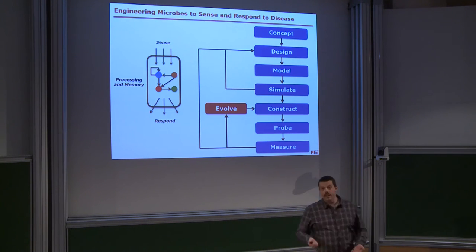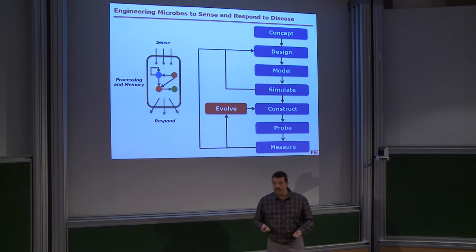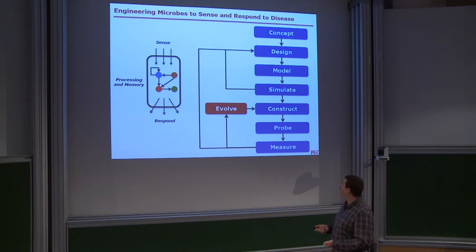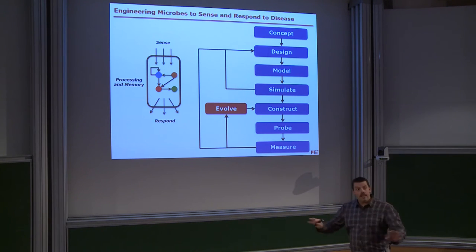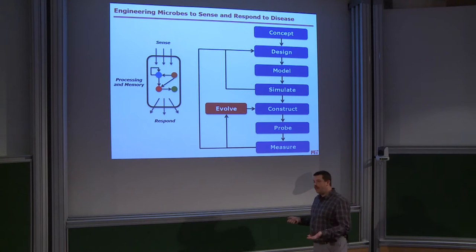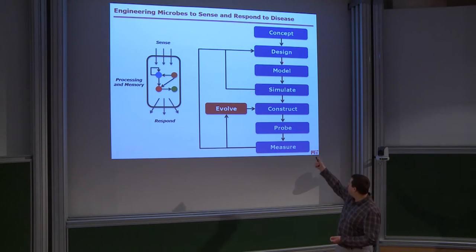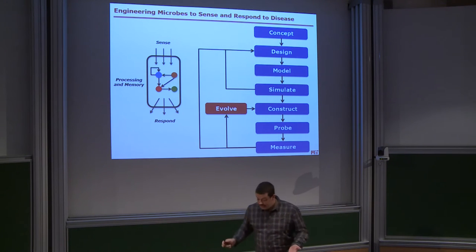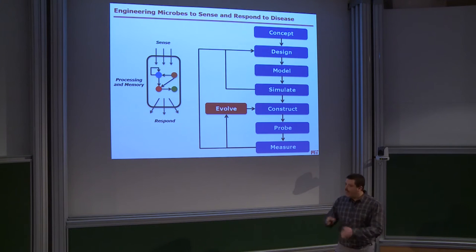We expect that synthetic biology, with its capability to design desired functions inside microorganisms, can help with designing microbes that will face this challenge. This is the common design-build-test cycle of synthetic biology: a concept leads to a design, which may be modeled and simulated, then constructed, probed in vitro, measured, and possibly evolved if something is not optimal. At MIT, as an engineering school, we strongly favor that top-down approach where you have an idea and, no matter what, you will build it.